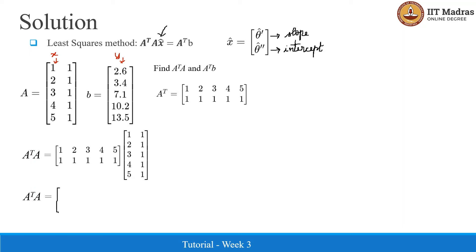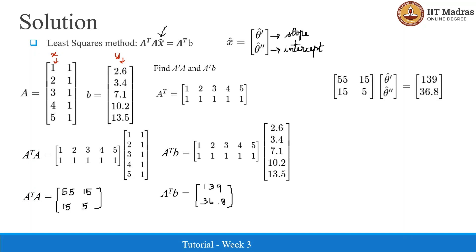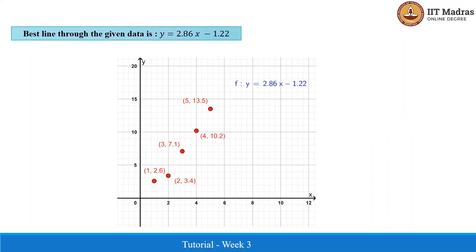Multiplying the first row with the first column gives 55, the first row with the second column gives 15, the second row with the first column gives 15, and the second row with the second column gives 5. So this is A-transpose A. Now finding A-transpose b, this can be written as a system of two linear equations with two unknowns, which is easily solvable. Solving these equations gives theta-hat prime equal to 2.86 and theta-hat double prime equal to minus 1.22. So the best line through the given data is y equals 2.86x minus 1.22.